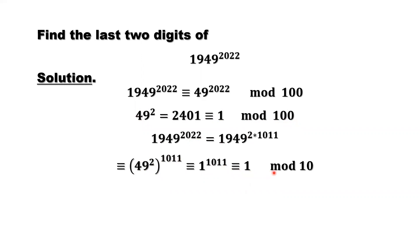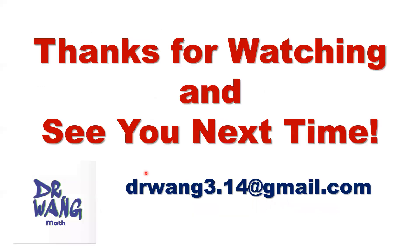What does this mean? This means the last two digits of 1949 to the power of 2022 are 01. Thanks for watching, and see you next time.